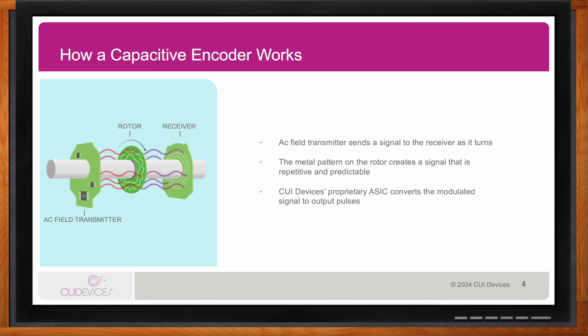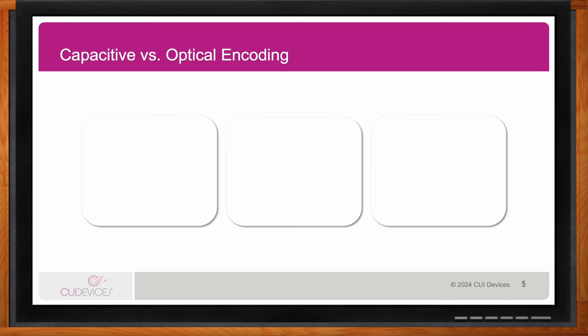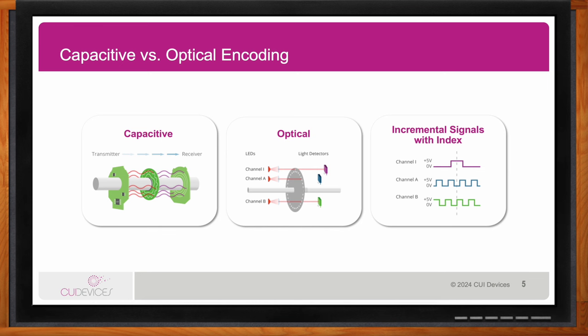How does capacitive encoding compare with optical encoding? They're vastly different technologies, but both get you to the same end goal: translating rotary motion into an output that a system can use. An optical encoder uses LEDs and a rotary disc with windows or slots that either allow light to pass through or block it — when the light goes through, the signal goes high; when blocked, the signal goes low. Both technologies ultimately give you incremental signals with an A channel, a B channel, and an index, just via different methods.